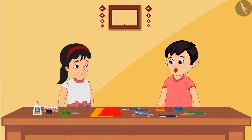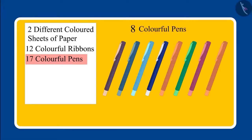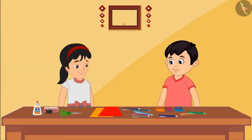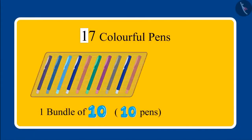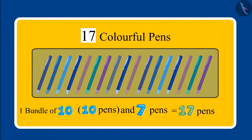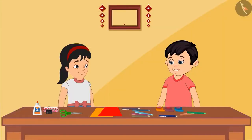Understood? Oh, I see. Oh no, I read the number of pens incorrectly too. I added one and seven and that's why I got eight pens. So now can you tell me the correct number of pens? Yes — one means one bundle of ten, and seven means seven more pens. So total: seventeen pens. Right, Pinky? Yes, Chotu, you are absolutely right.